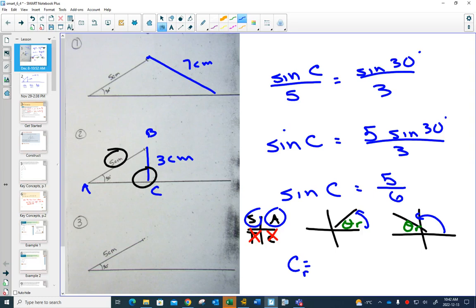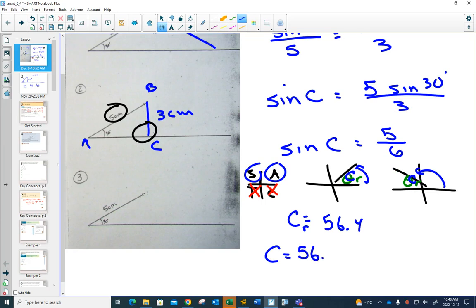And if I do sine inverse of 5/6, my reference angle for C, sine inverse of 5/6, is 56.4. That means that angle C is either 56.4, or to find this one in quadrant 2, I'd have to do 180 minus 56.4, 123.6.